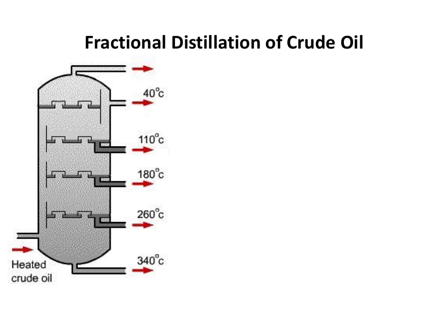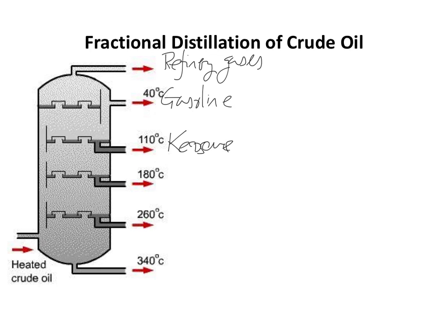You'll need to learn the names of the fractions that come out of the distillation column. At the top we have refinery gases, then gasoline, then kerosene, then diesel, then fuel oil, and at the bottom we have bitumen. You have to know these names - they haven't been asked recently in exams, but you are expected to know them. A rhyme to help remember them is: 'Really Gassy Kangaroos Drink Foster's Beer' - and that seems to help students.